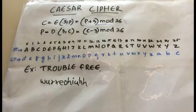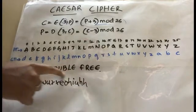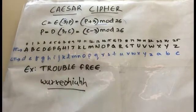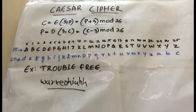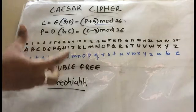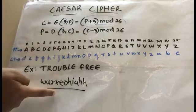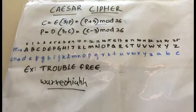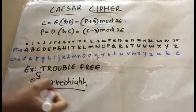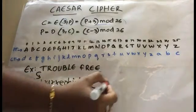So the plaintext is 'TROUBLEFEE' and the ciphertext is 'WURXEOHIUHH'. If you send the message as 'TROUBLEFEE' everybody can understand it, but when changed into this unreadable ciphertext format nobody can understand it. This completes the encryption part.